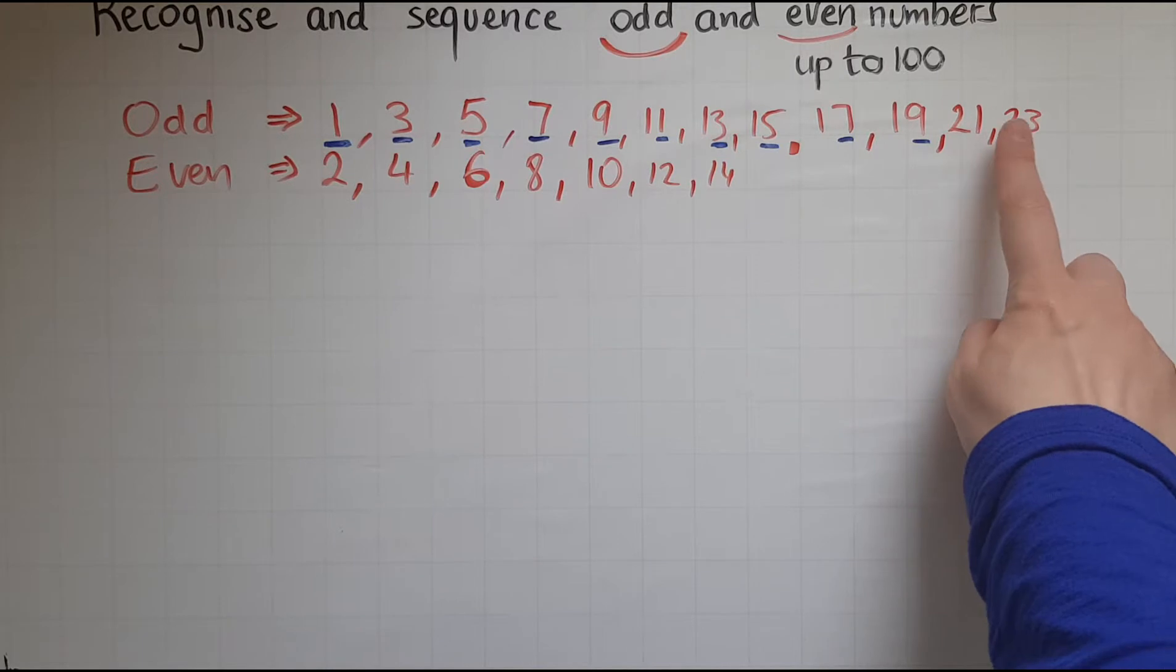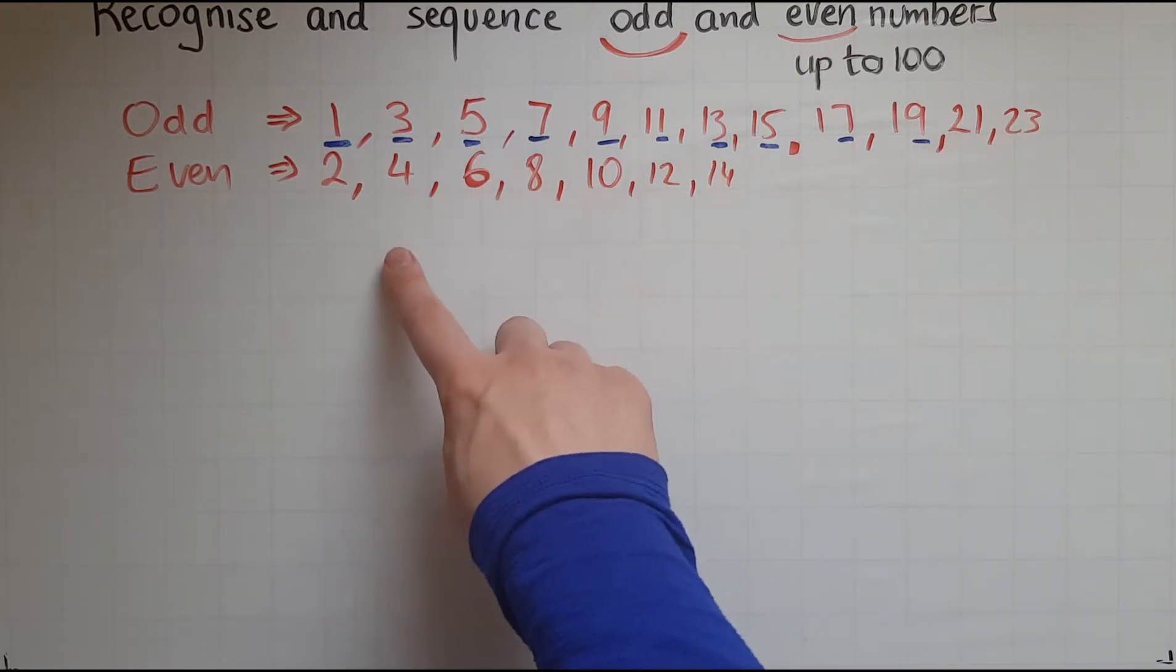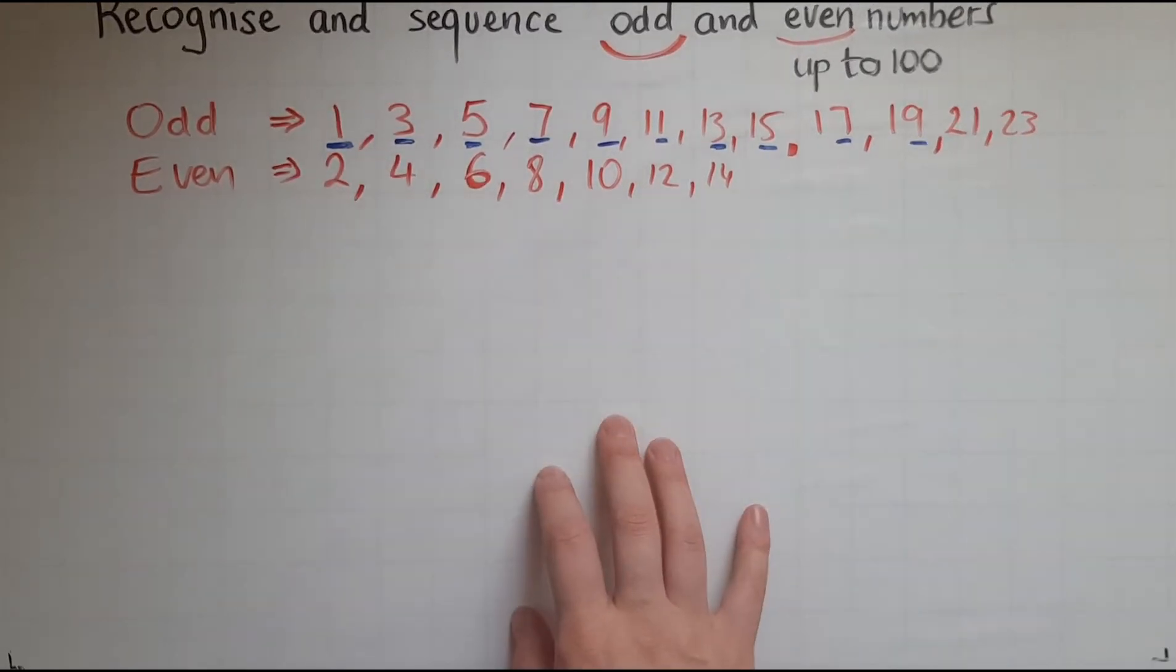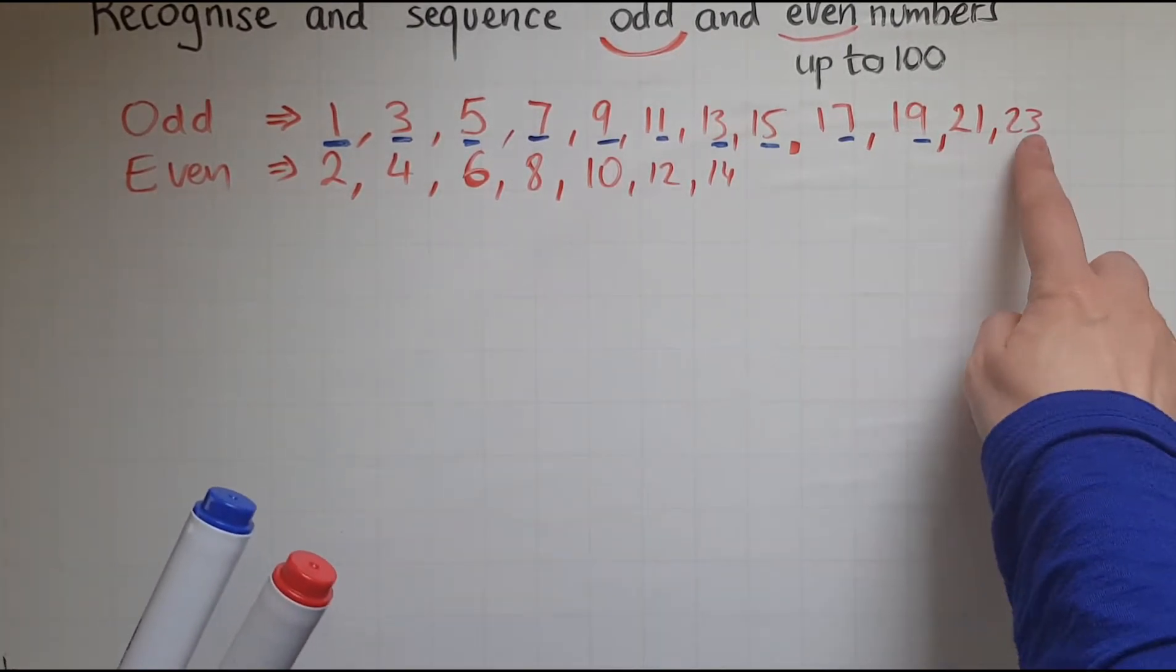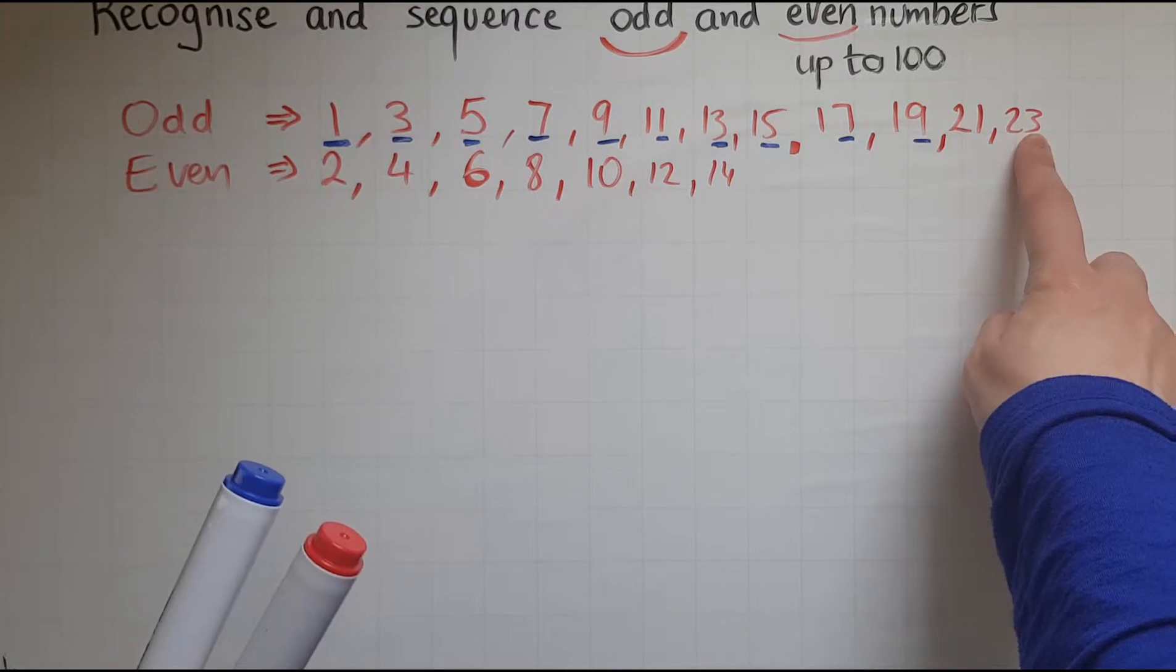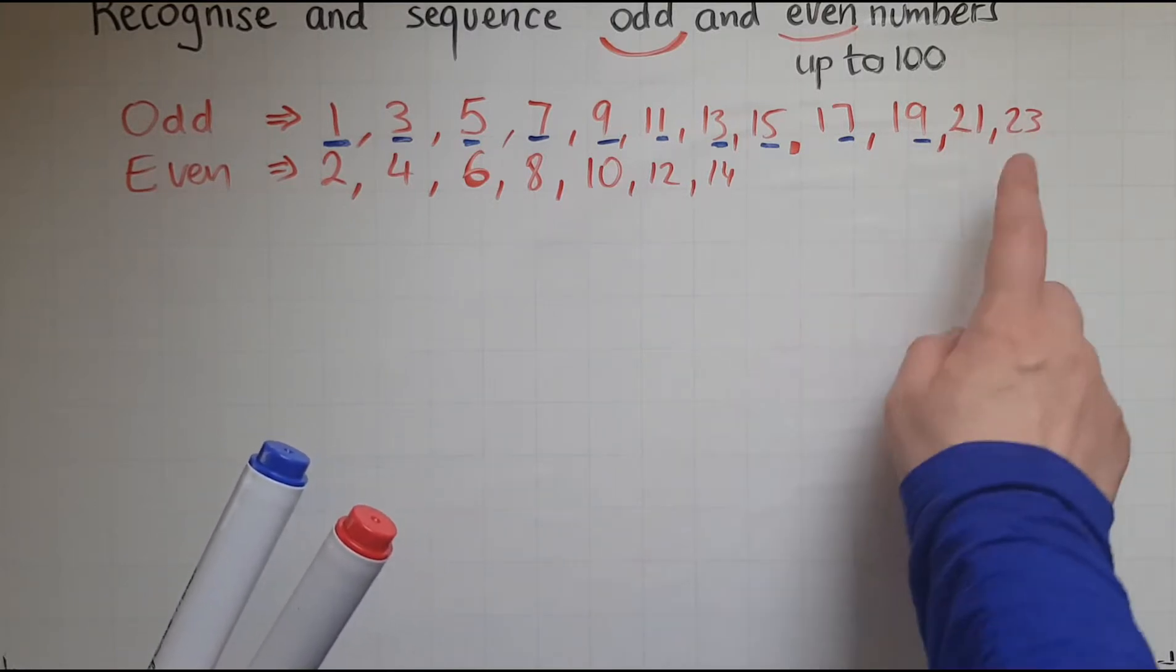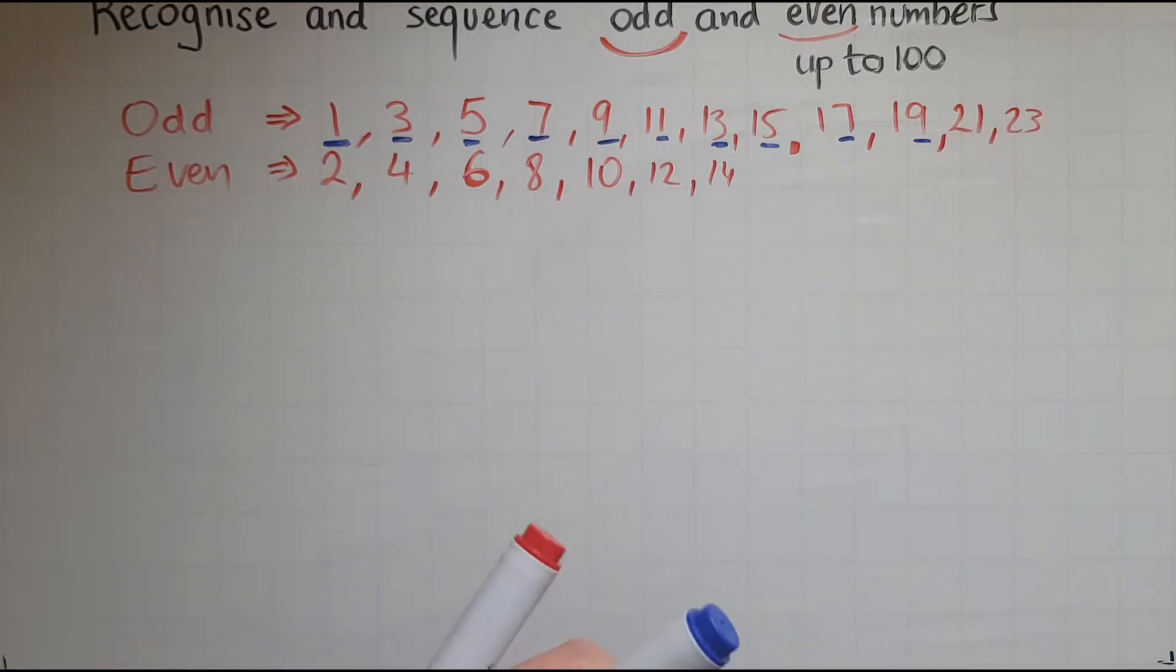So if the unit is odd, so will be the whole number. So 3 is odd, 23 is odd. So you just need to look at the unit.